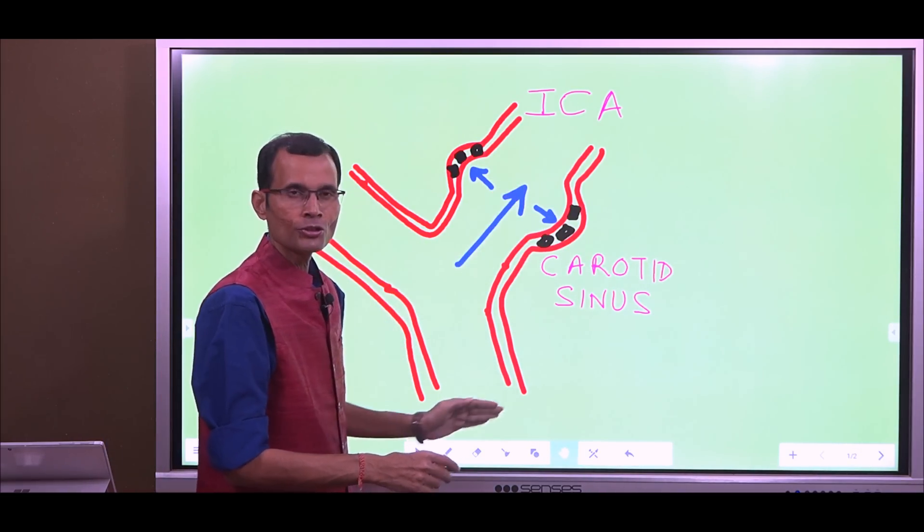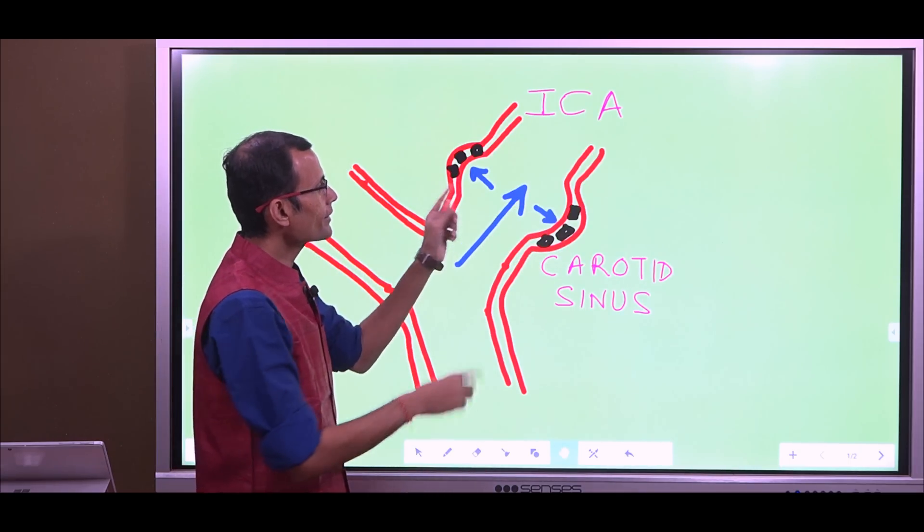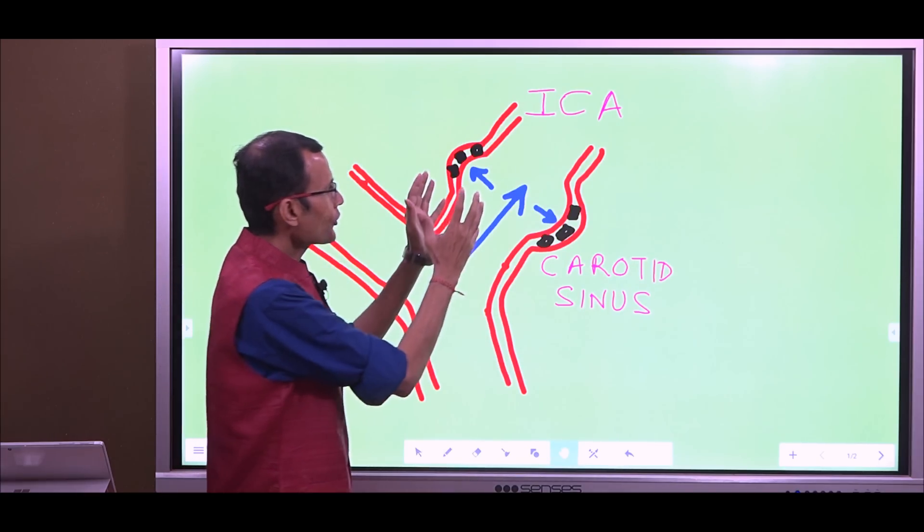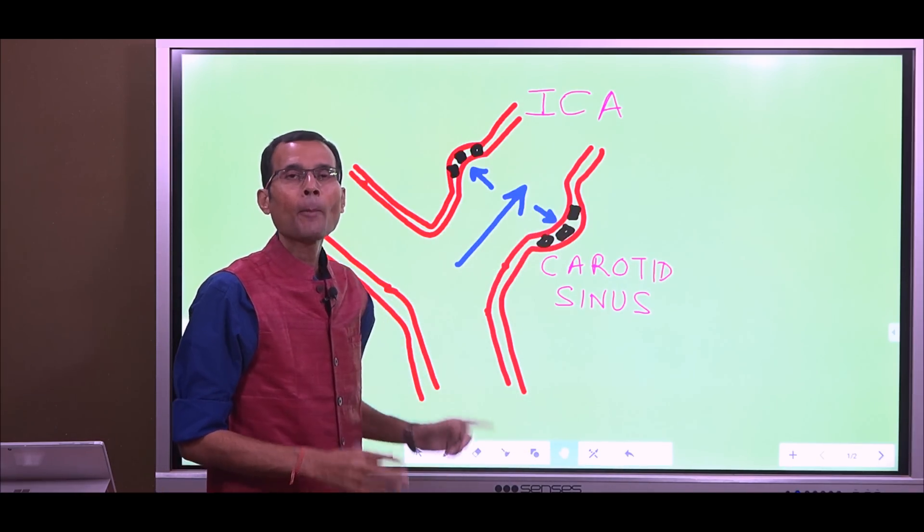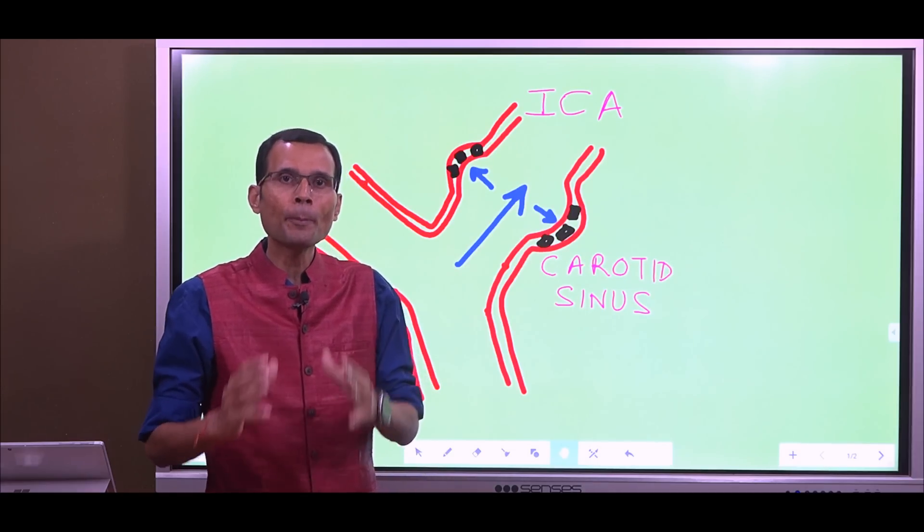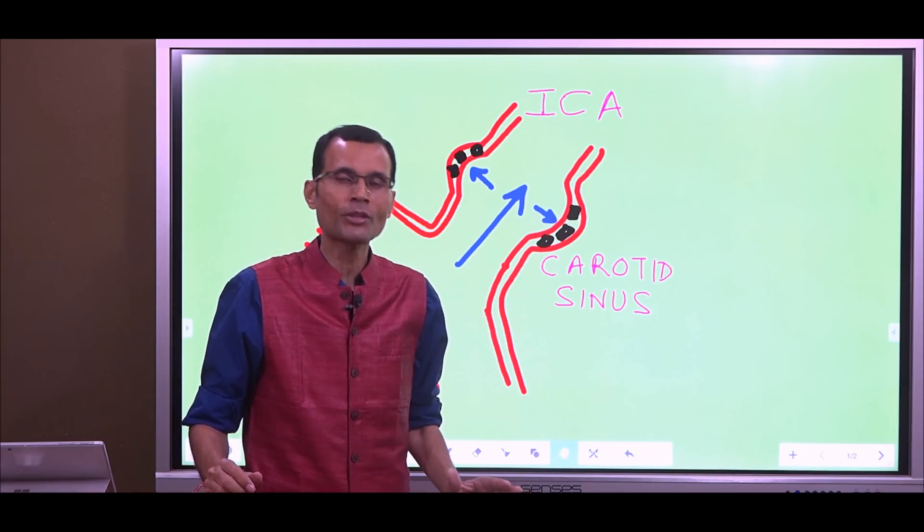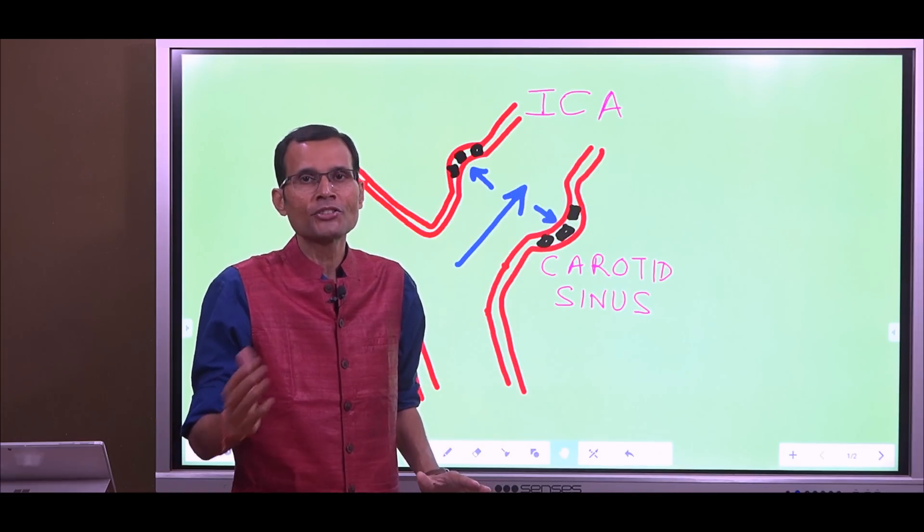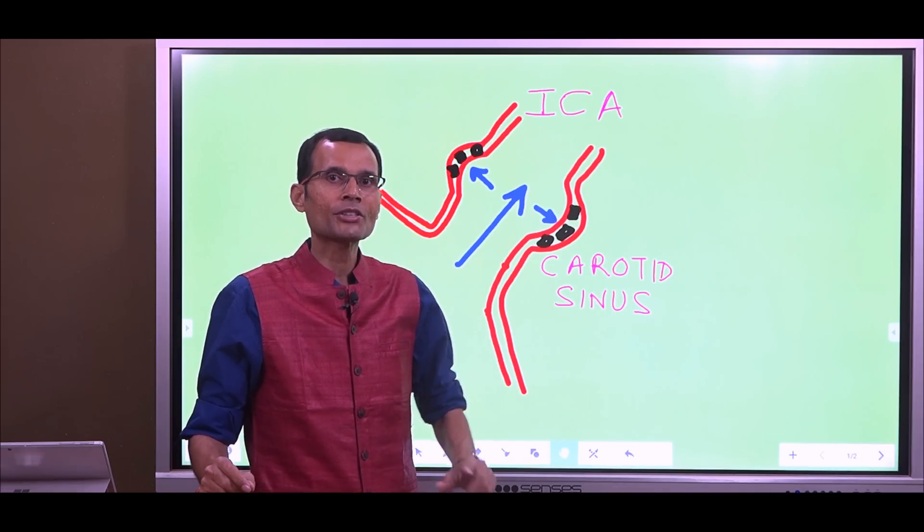As the blood flows it causes distension and stretch of the vessel wall, and that stretch of the vessel wall distorts these baroreceptors. So in true sense they are stretch-sensitive mechanoreceptors. They are sensing the stretch of the vessel wall which is caused by the changes in pressure. But they are actually not sensing the pressure directly. They are sensing the stretch on the vessel wall caused by the blood and its pressure.